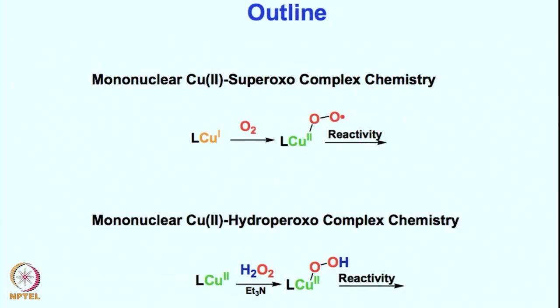The outline of today's lecture covers mononuclear copper superoxo complex chemistry, where one ligand-copper complex reacts with one oxygen to give a ligand-copper superoxo species, and how these superoxo species react with organic substrates. The second topic is the reaction of a ligand-copper(II) complex with hydrogen peroxide in the presence of base to give the ligand-copper hydroperoxo species and its reactivity pattern.